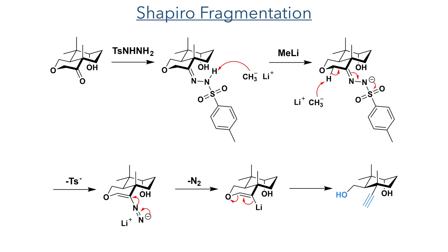A Shapiro fragmentation then followed, using typical Shapiro reaction conditions. However, due to the ether beta to the ketone group, a fragmentation was possible. Tosylhydrazine reacted with the ketone to form a hydrazone, which was then deprotonated using methyl lithium. The proton in the alpha position was also deprotonated, triggering the elimination of the tosyl group and leaving a diazonium moiety on the substrate. Elimination of nitrogen gas drives the reaction forward, leaving an unstable vinyl lithium species. In this molecule it undergoes a fragmentation to generate the desired alkyne alcohol product.